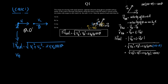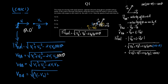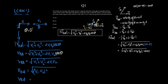This simplifies to √(V1 − V2)², which equals V1 − V2. So velocity of B with respect to A equals V1 − V2 when the angle is 0 degrees. I hope this algebraic calculation is clear. This is Case 1.